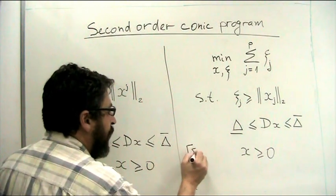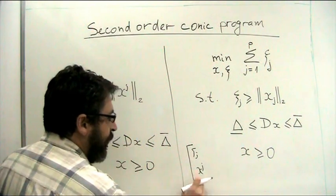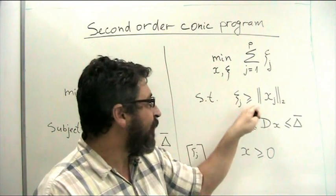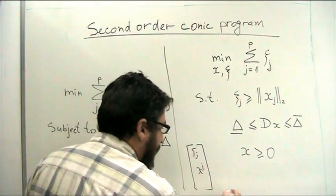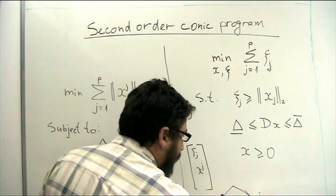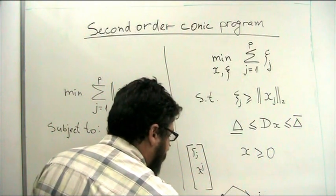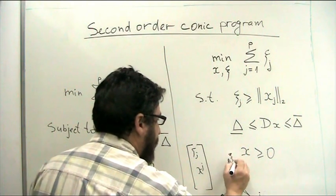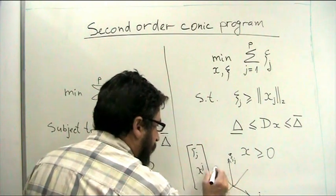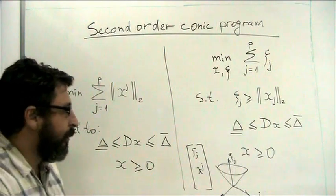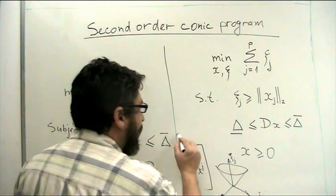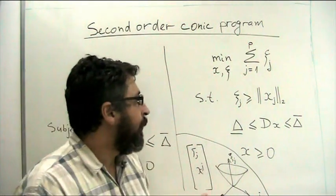And we introduce constraints that psi j is greater or equal than norm xj. So if you will look at the long vector psi j and xj, this is vector and this is scalar, all this vector, this constraint says that this vector belongs to a cone. So if you would have two variables xj1 and xj2, and here is my variable psi j, so I have a vector of three variables and my feasible area will be inside of this second order cone, which is defined by graph of the norm of the vector xj.